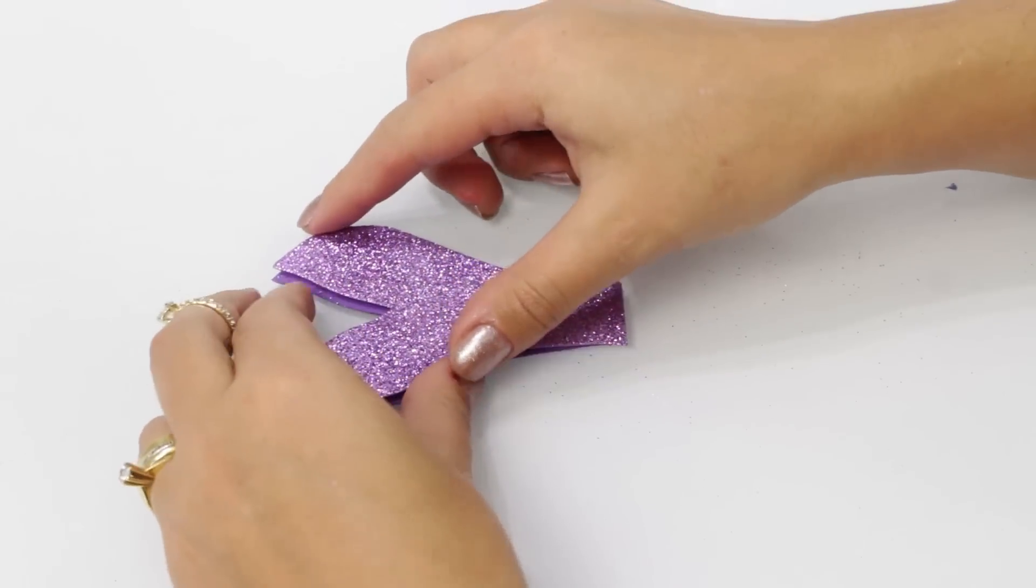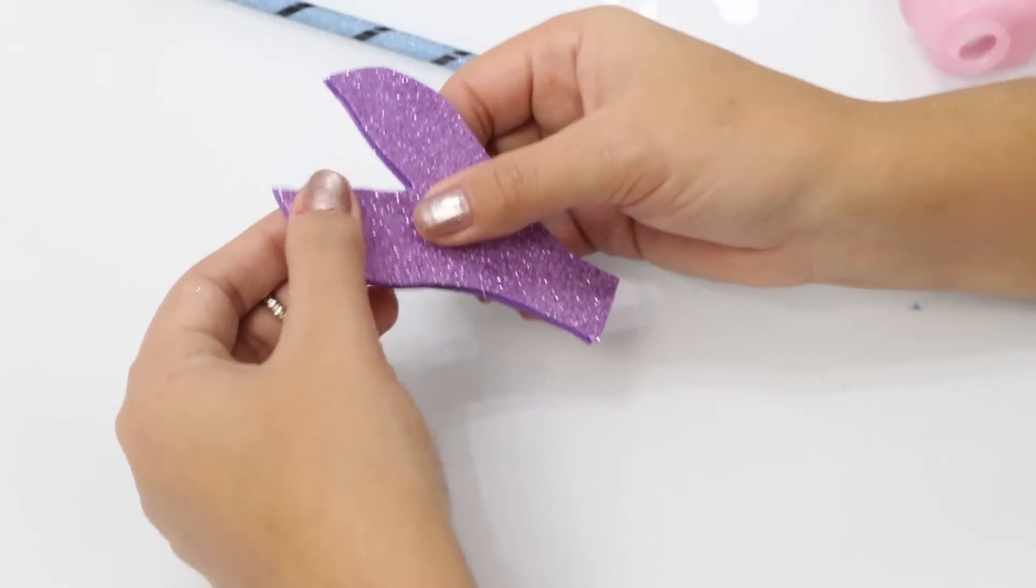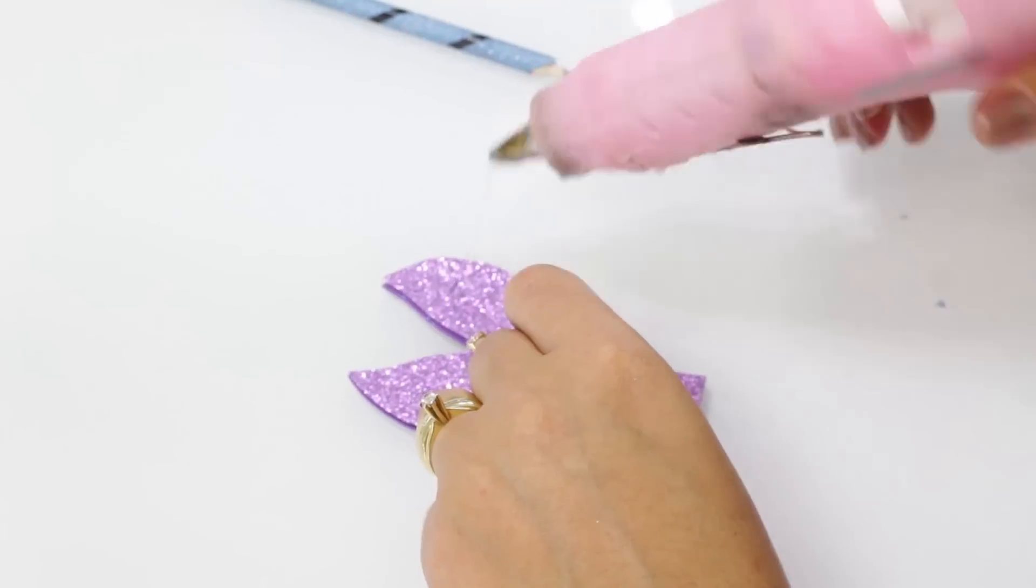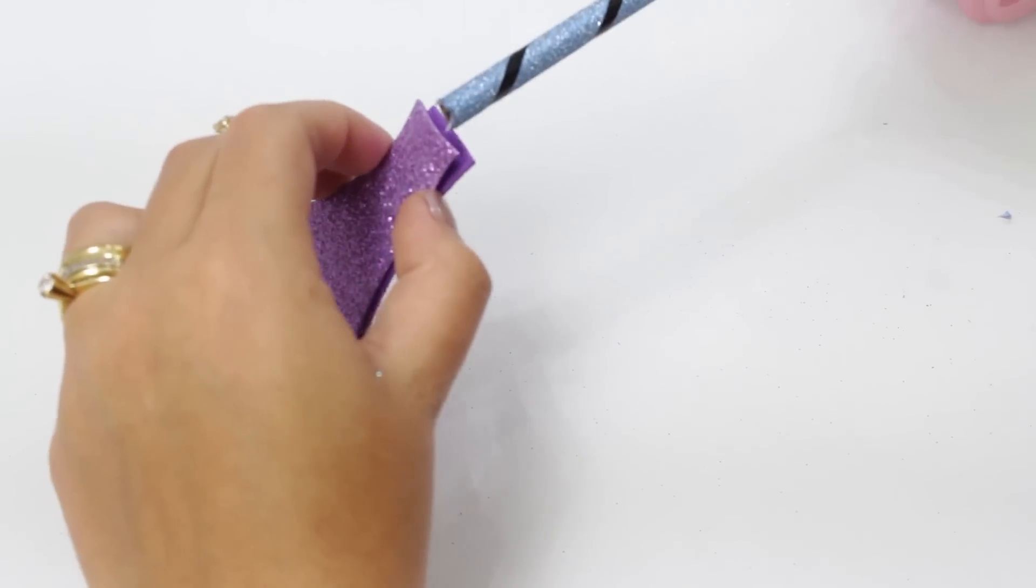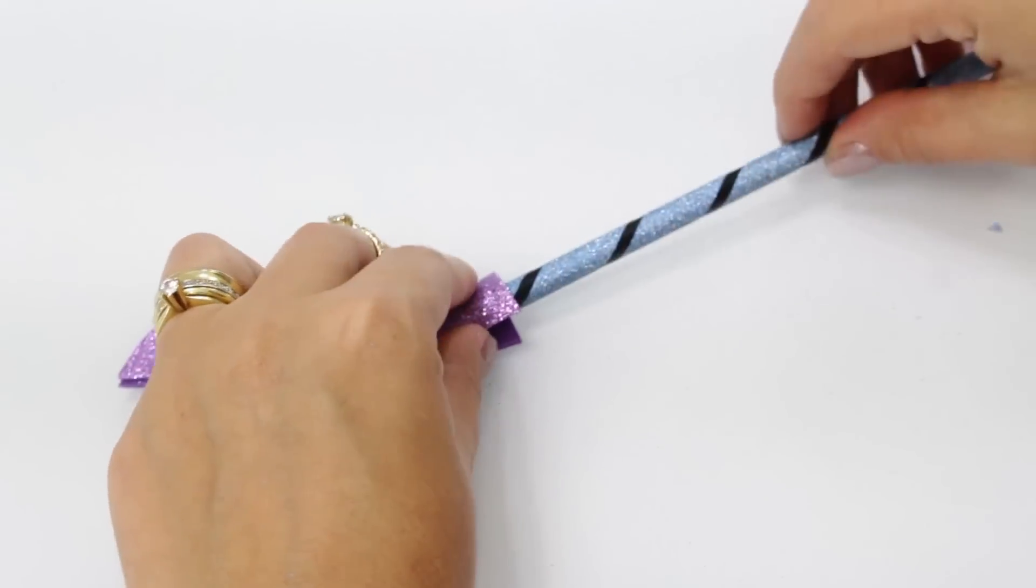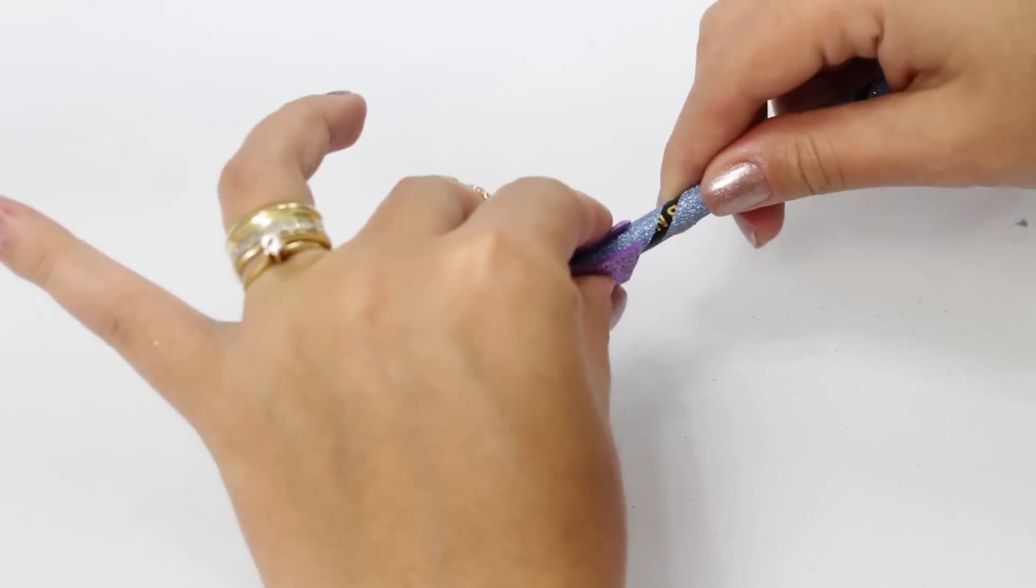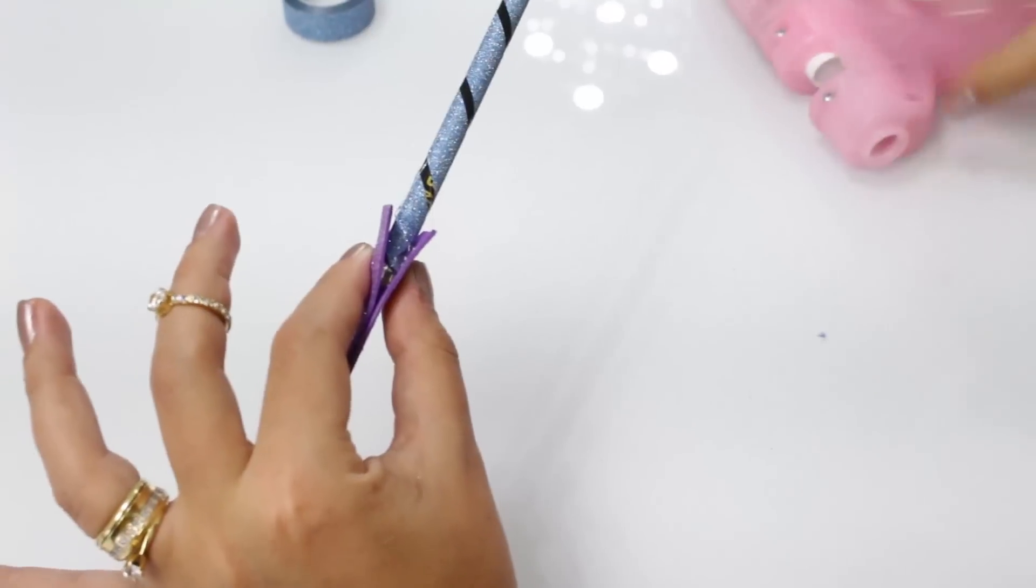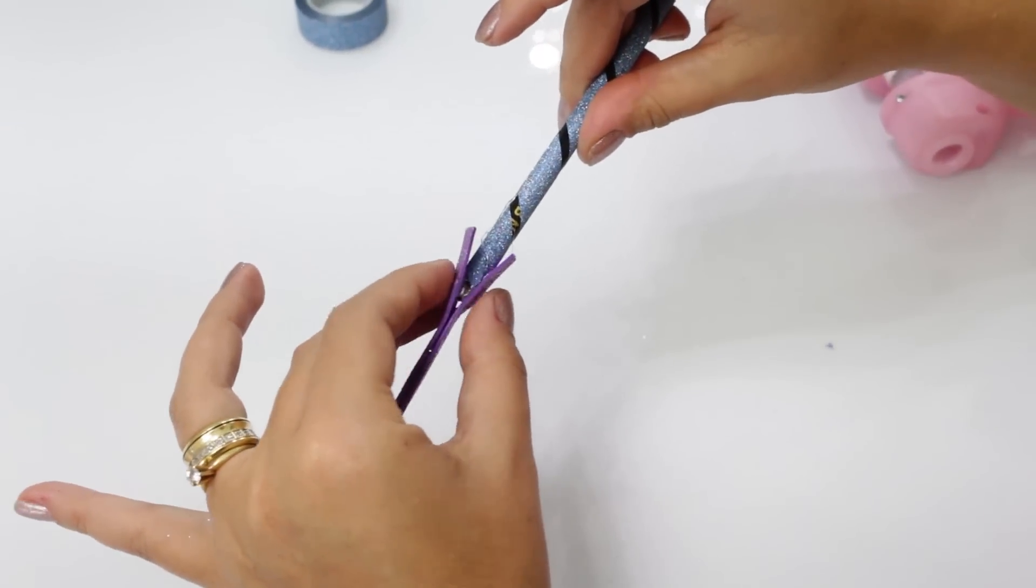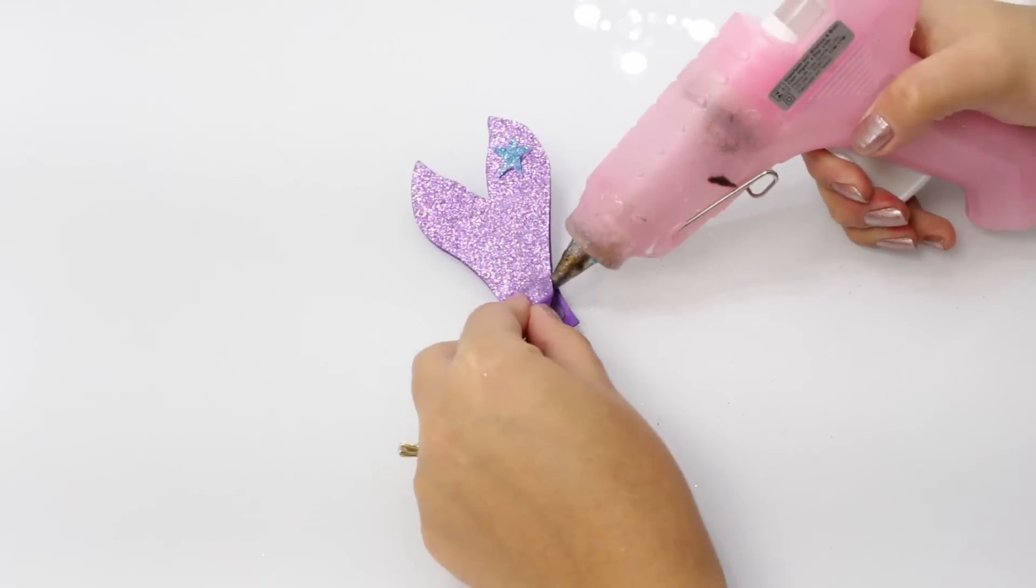Desse jeitinho que vocês estão vendo. A parte de baixo mesmo, onde eu vou colar o lápis, essa parte eu não passo cola quente. Essa parte fica pra depois. Venho com um pinguinho de cola quente só pra colar a estrelinha de EVA azul que eu recortei. E agora sim eu coloco o lápis por dentro aqui da minha cauda, bem delicadamente. E aí nas laterais eu venho e passo a cola quente pra fechar a cauda da minha sereia, desse jeitinho que vocês estão vendo no vídeo. Segura um pouquinho pra colar e é só isso.